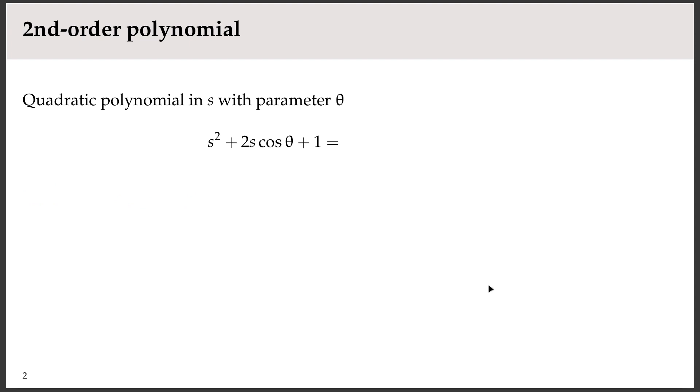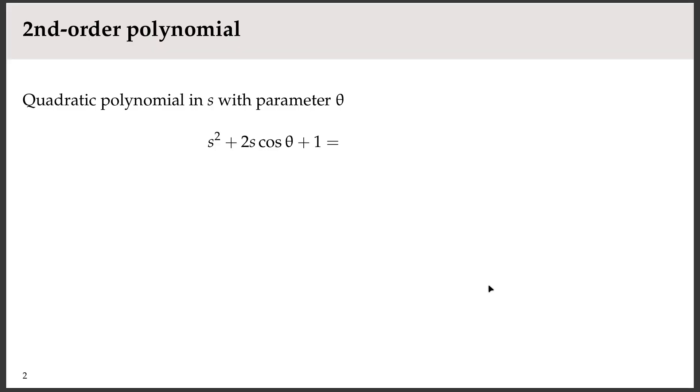Let's start with something simple. A second-order polynomial, really a one-parameter family of polynomials, where the parameter is theta. It may look a bit strange here. S is just, let's say it's a complex variable. Actually, it's the Laplace transform variable, so it's a complex number. And we'll be looking at this polynomial in the complex plane. So the coefficient of s squared is 1, the constant is 1, and the linear coefficient is 2 cos theta.